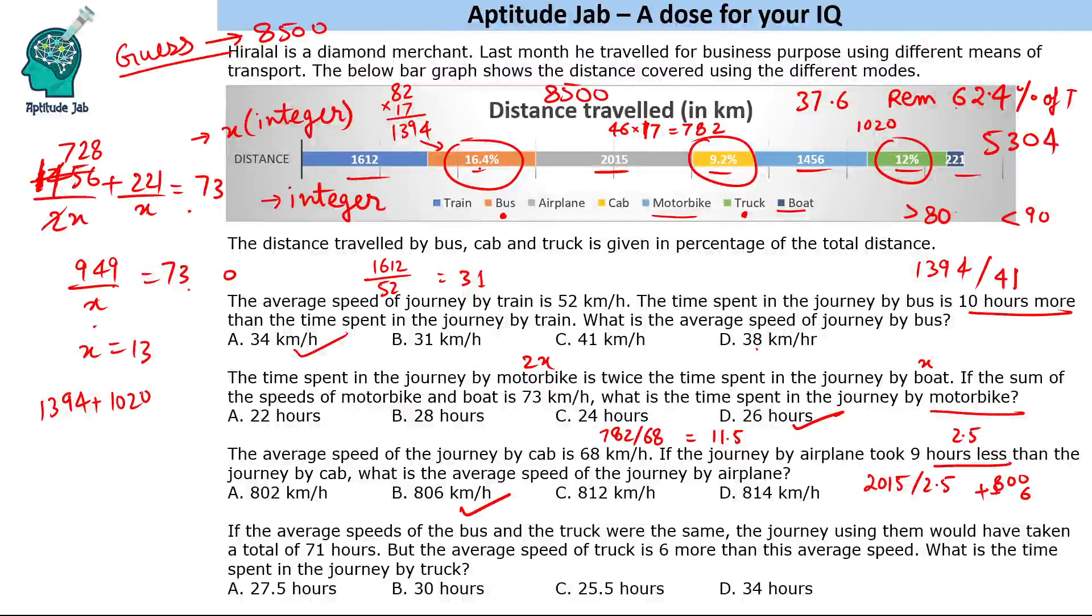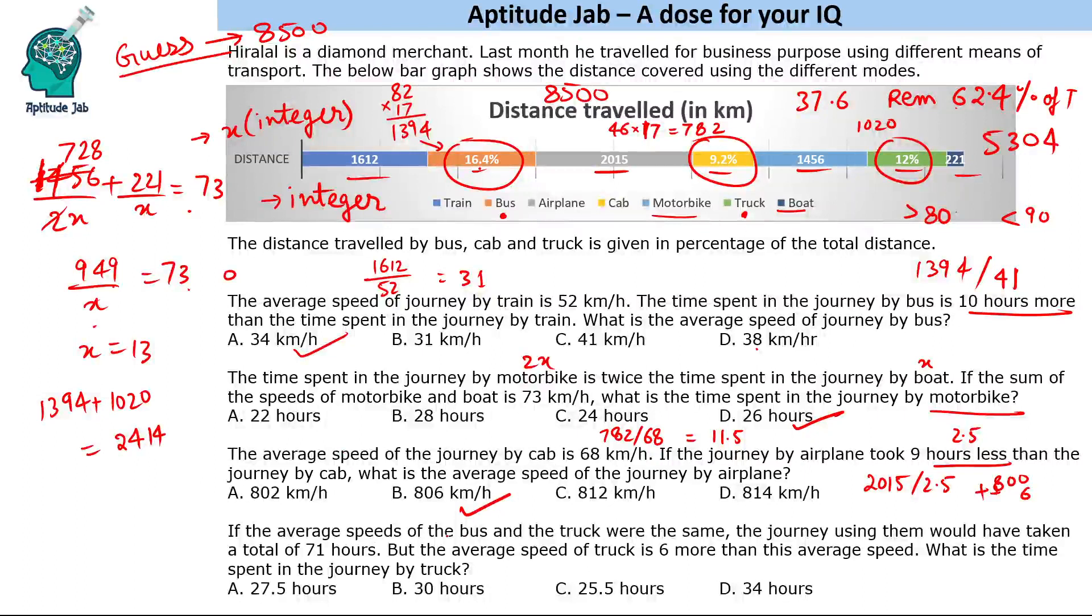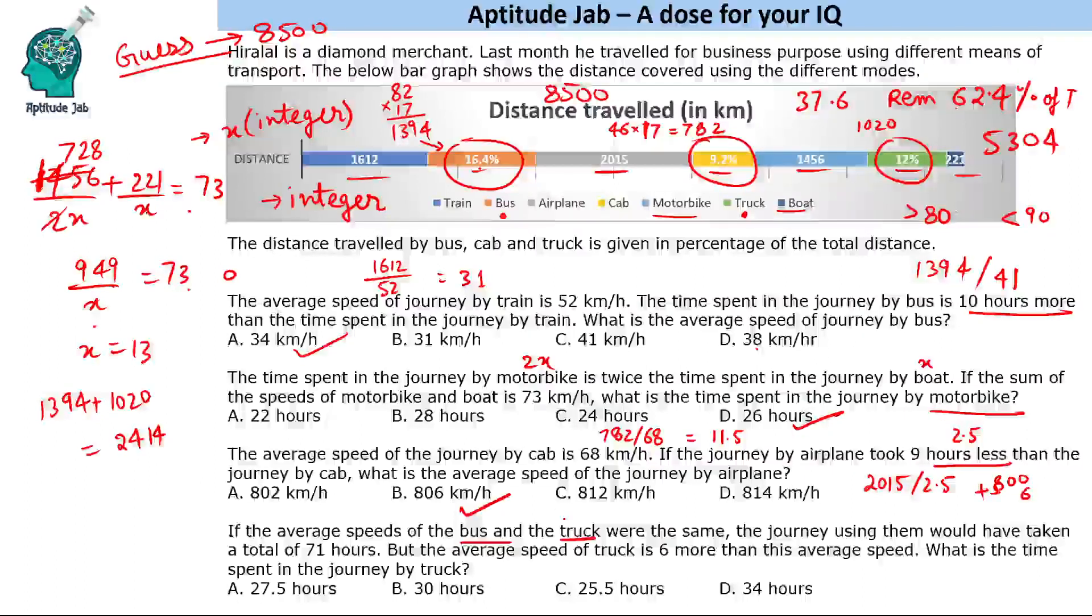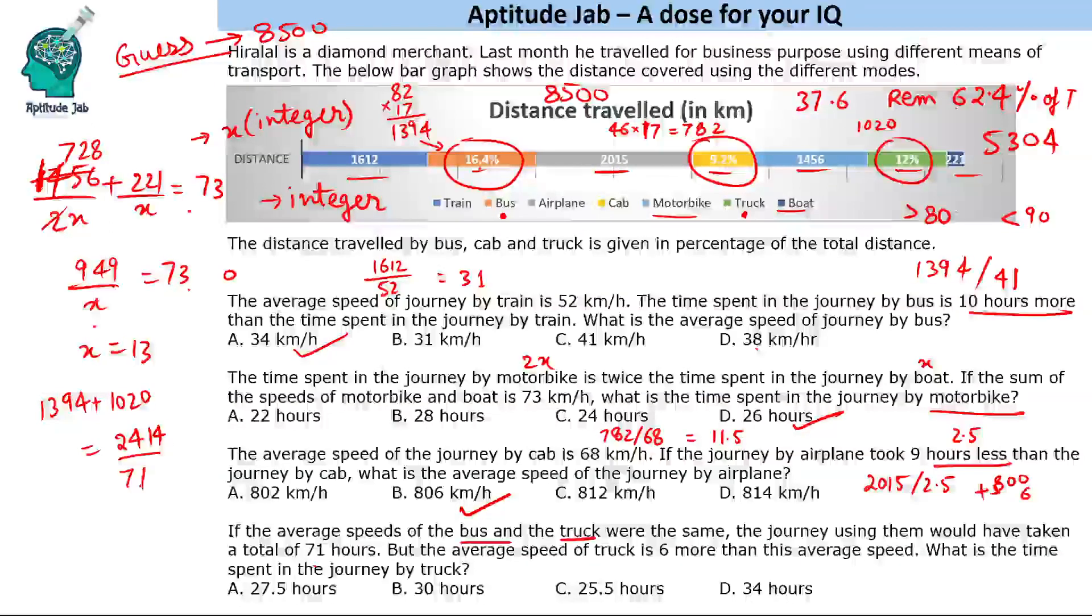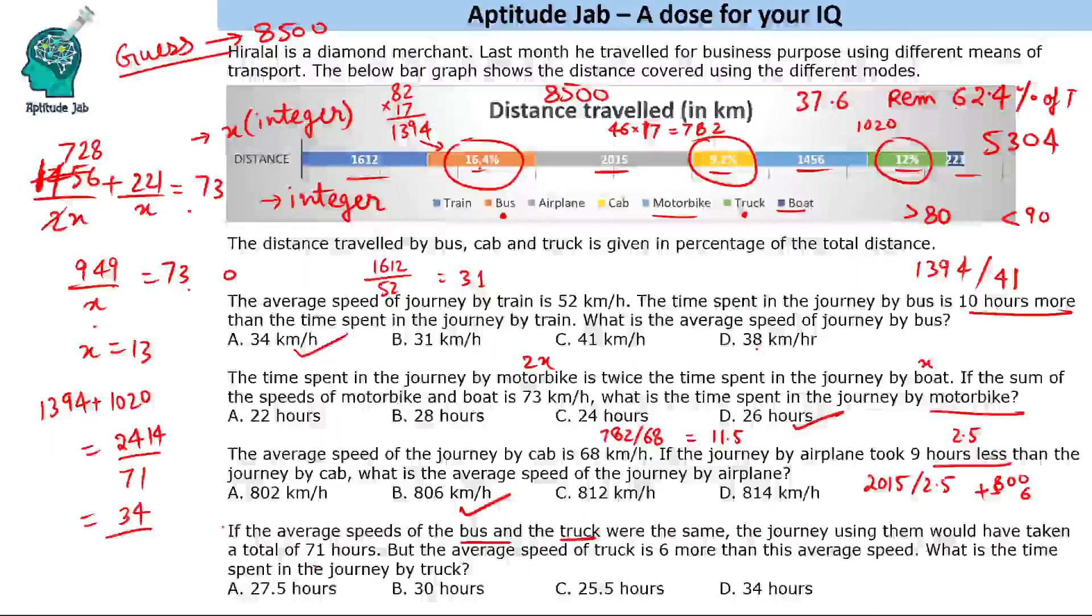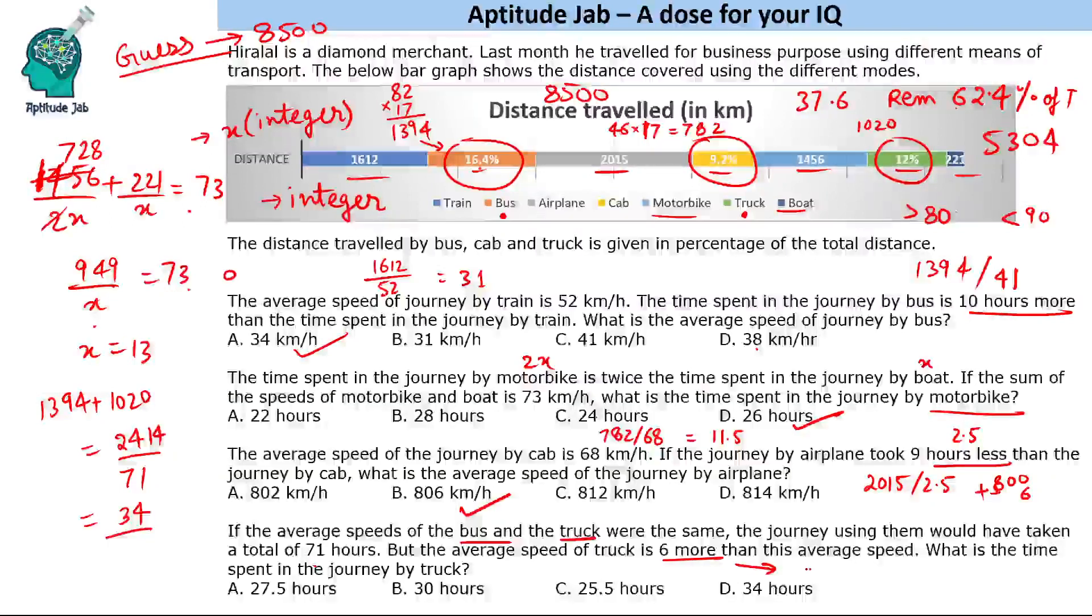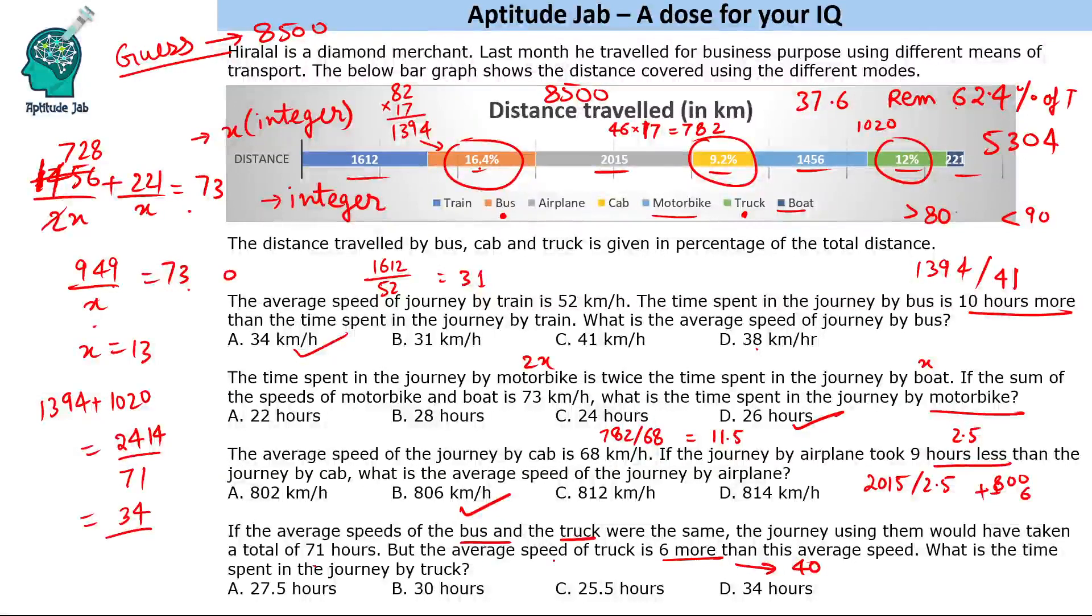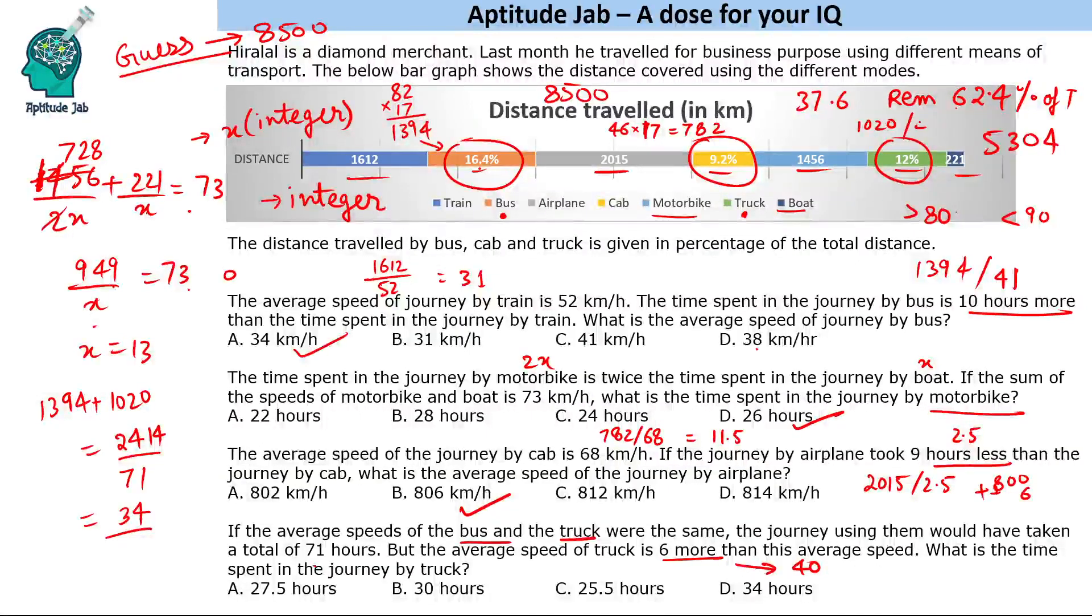That gives us 2414 kilometers covered by bus and truck. So if their speed was same, the time would have been 71. So time is known, distance is known, so we can find that speed. So that speed will be 71 into 3, that is 213, 284, so 34 is that speed. So it is saying the average speed of truck is 6 more, so that means the speed of truck is 40.